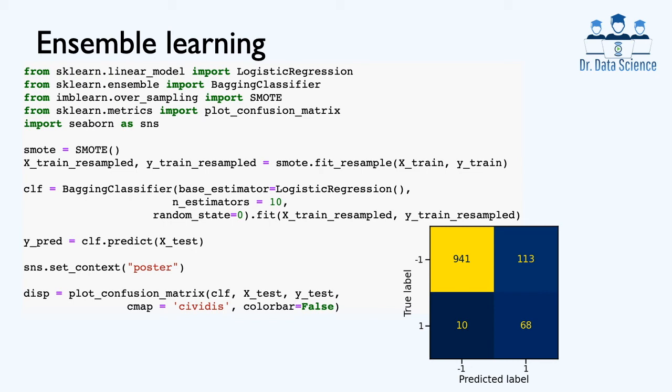Now we plot the confusion matrix. As you can see, we are doing a much better job in terms of reducing false negatives. Out of 78 positive samples, we have correctly classified 68 of them, with only 10 false negatives. We also have only 113 false positives. Overall, this classifier gives us much better and reliable results compared to the previous slide where we had a large number of false negatives.